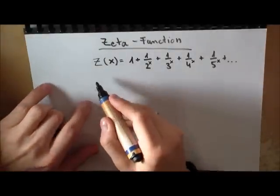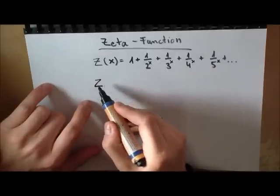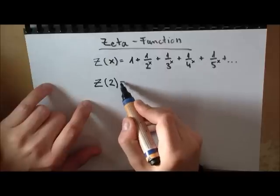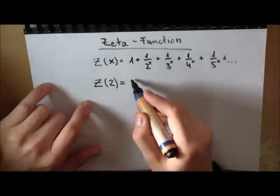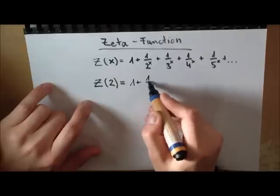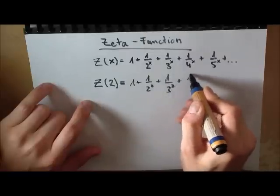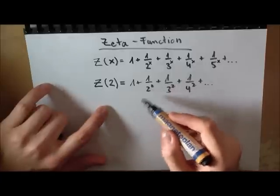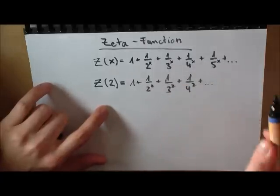Now what is the interesting part about this? The interesting part is that the Zeta function has very specific values, and I will give you a very interesting one. For X equals 2, its value—if you take all the square numbers and take the reciprocal, so 1 over a square number, and add them all up...